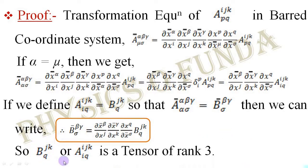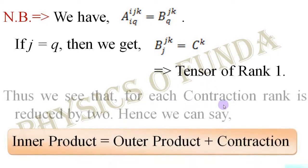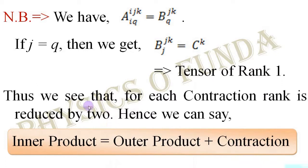If we take another contraction of this resulting tensor, we set contravariant index j and covariant index q equal, obtaining tensor C with contravariant index k — a tensor of rank 1. So: tensor A of rank 5, one contraction gives tensor B of rank 3, further contraction gives tensor C of rank 1. For each contraction, the rank of a tensor is reduced by 2. Combining this with inner and outer product, we can say that inner product is equivalent to outer product plus contraction.